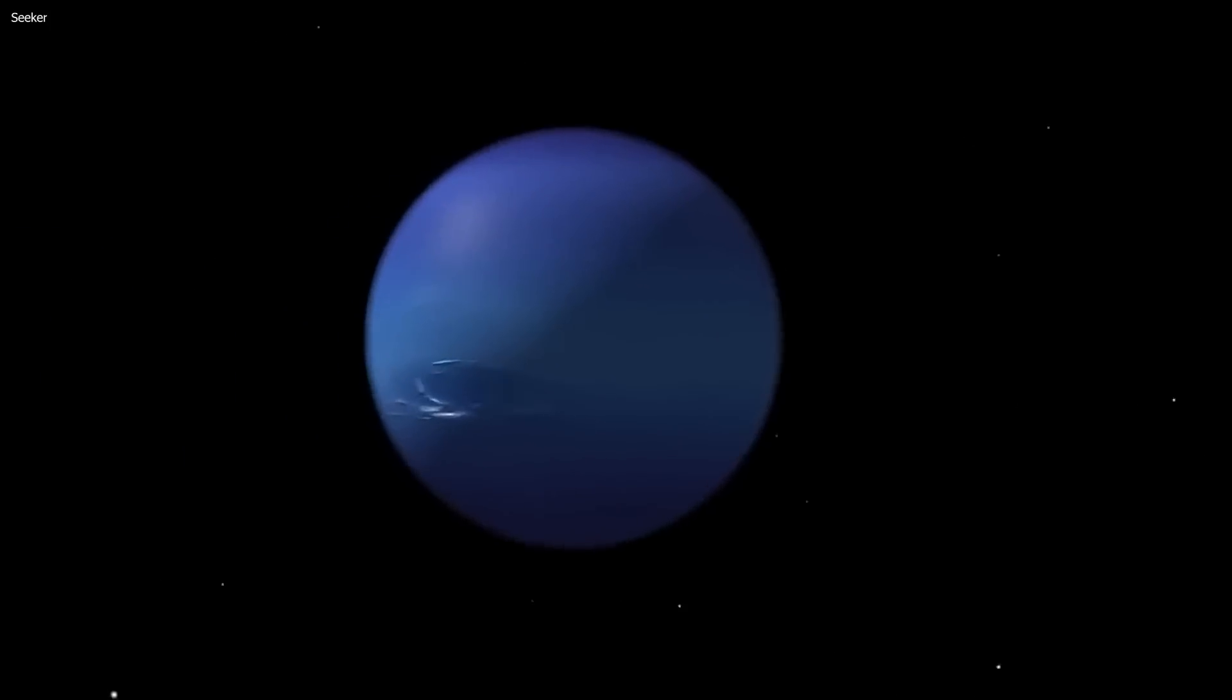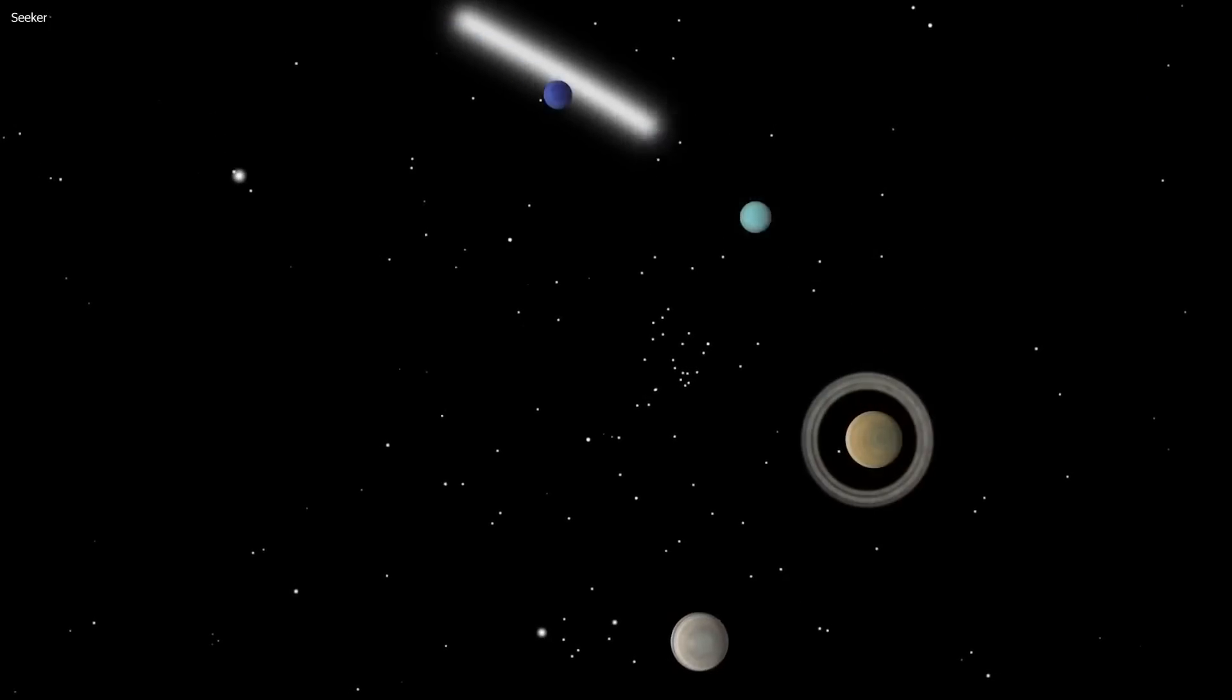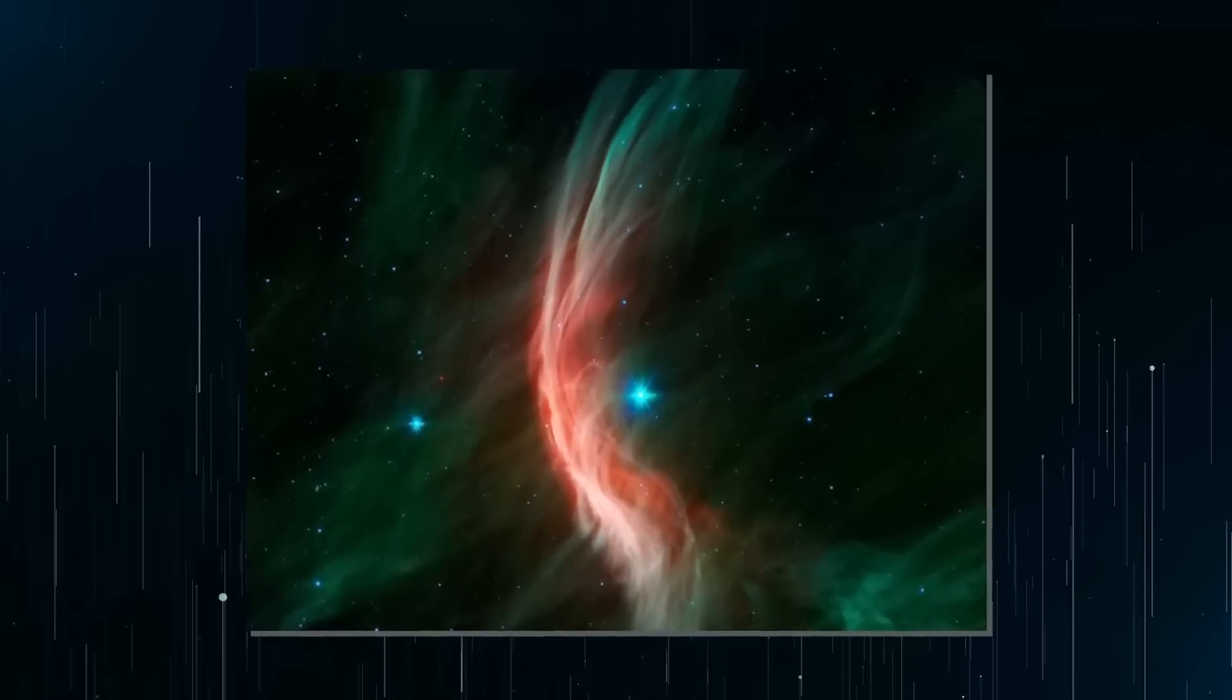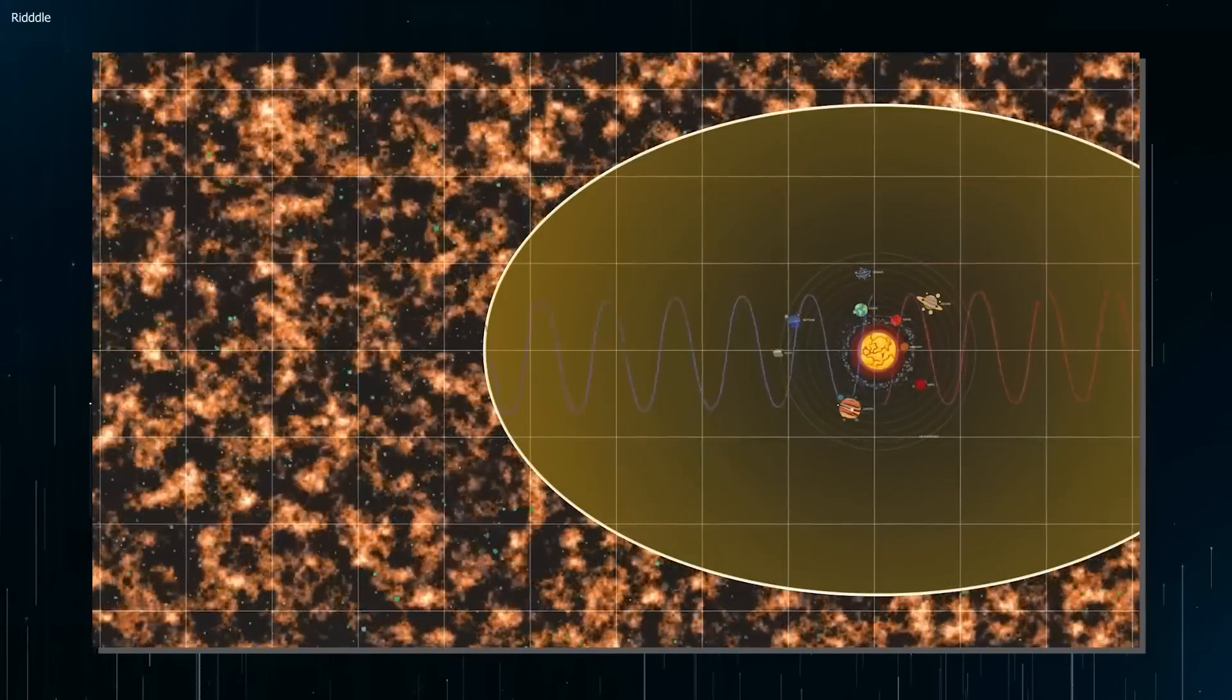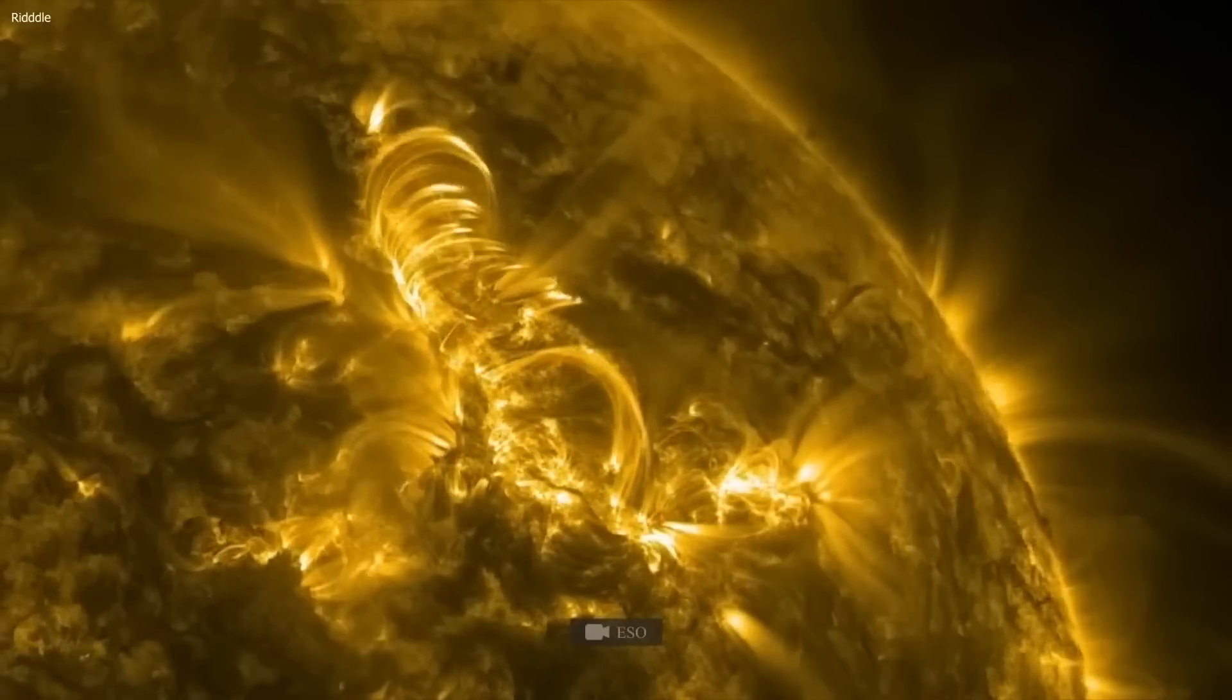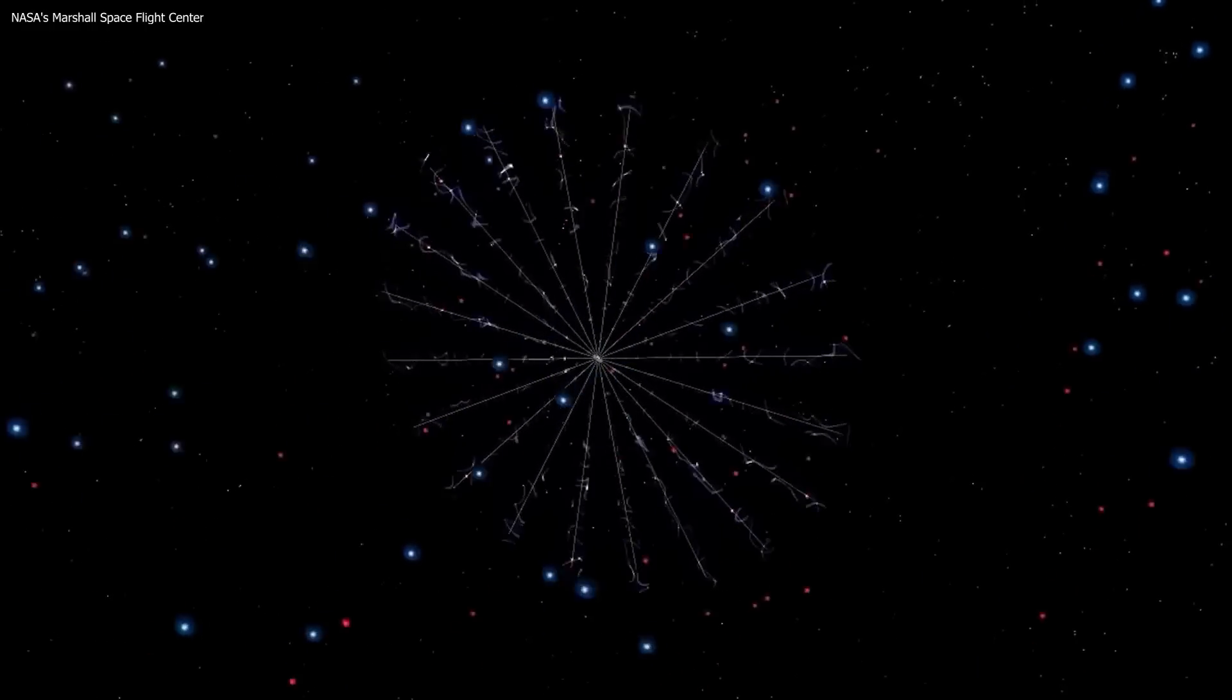It extends far beyond the orbit of Pluto and serves as a protective shield, deflecting most of the high-energy cosmic radiation that comes from interstellar space. The interstellar medium is the sparse and tenuous matter that exists between stars in the galaxy. It is a mixture of gas and dust, consisting mainly of hydrogen and helium, but also containing trace amounts of other elements.